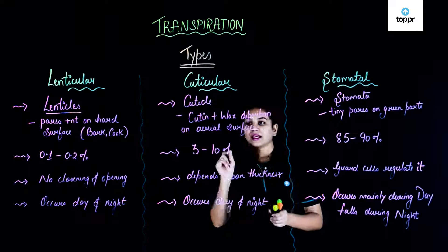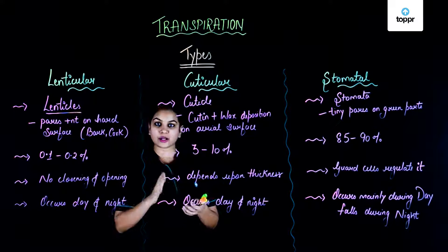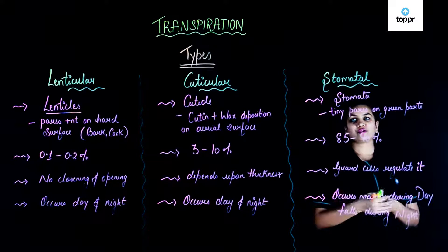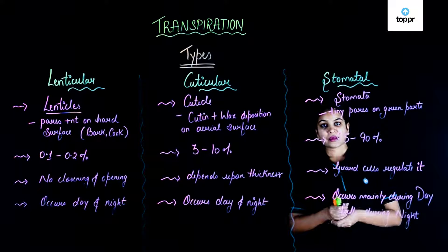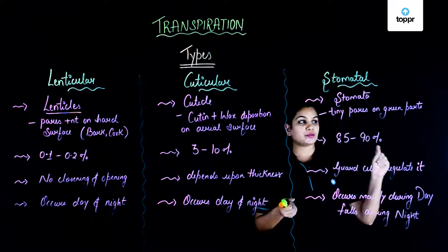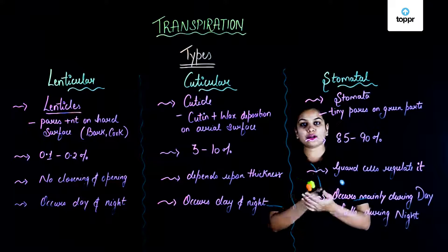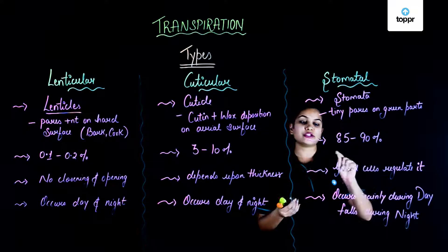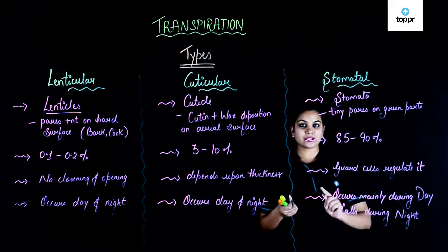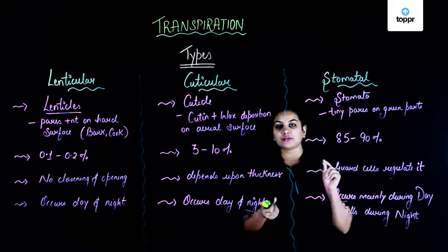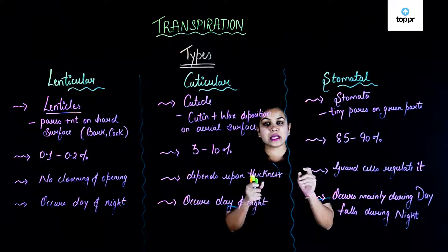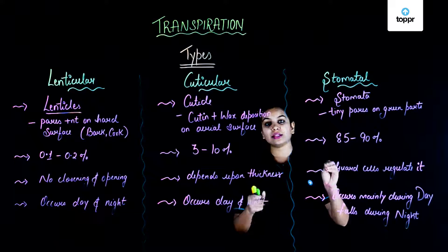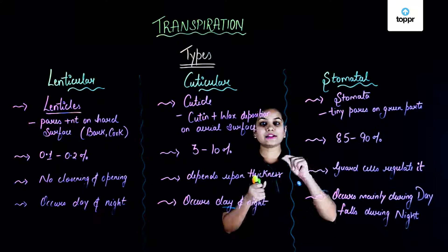Although the cuticle deposition is non-living, it is still a type of transpiration because it occurs on living tissue. Next is stomatal transpiration, which occurs with the help of stomata — tiny pores present on the green parts of the plant. In a dicot leaf, stomata are mainly on the lower surface. The major chunk of transpiration — around 85 to 90% — occurs through stomata. Guard cells are present in the stomatal apparatus, and as they open and close, the stomata regulate transpiration.